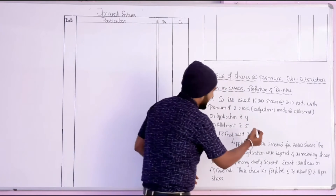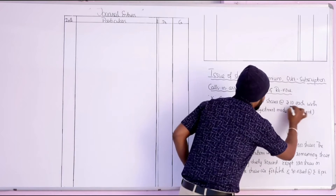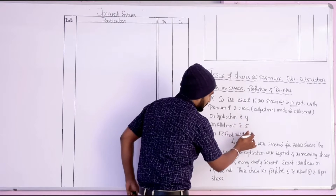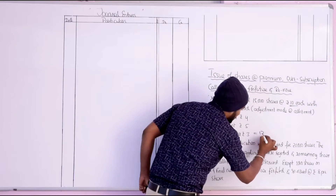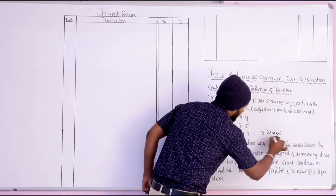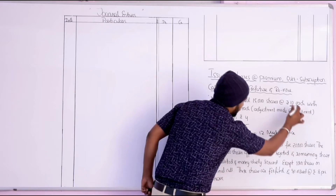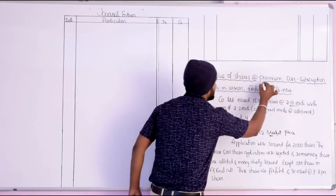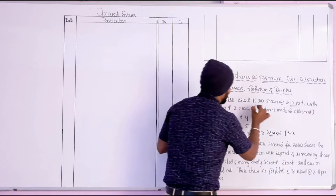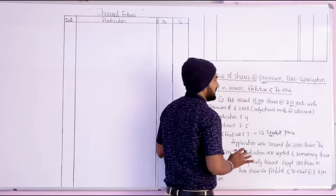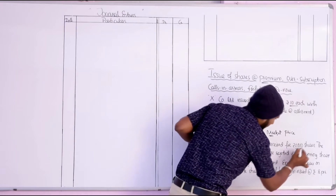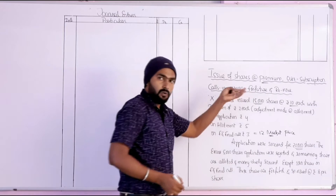Issue of shares at premium means the market price is more than the face value. For example, a company issues 15,000 shares, but applications are received for 20,000 shares. That is over-subscription.